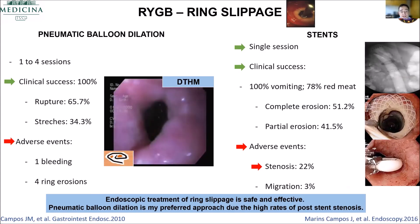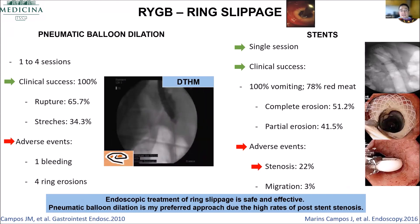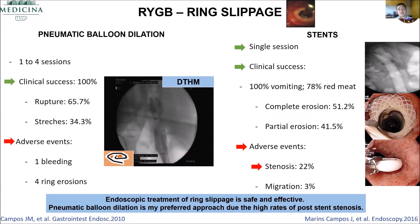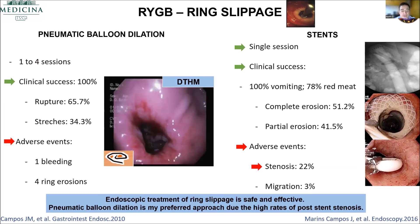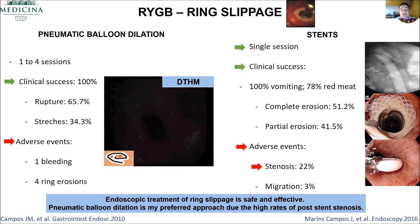Ring slippage — you have two techniques: self-expandable metal stent and pneumatic balloon dilation. I prefer pneumatic balloon dilation because with stents, when you remove them, you're going to have stenosis in about 25% of patients due to the fibrotic ring. I always go to pneumatic balloon dilation first; when I cannot do that, I go to the stent. Both have a very high clinical success rate.